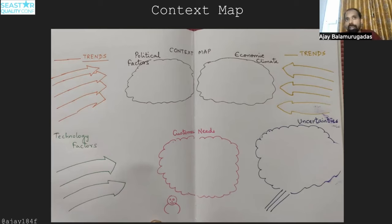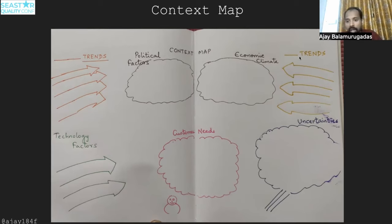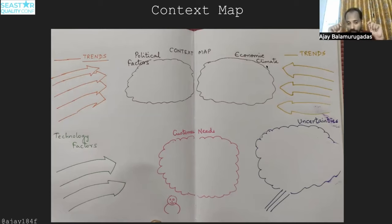Testers need to understand about context. If they don't understand context, they'll keep repeating the same stuff and expecting different results. With the context map technique, you draw trends on the right side, technology factors at the bottom left, uncertainties at the bottom right, the customer at the center labeled 'customer needs,' and at the top two clouds: political factors and economic climate.